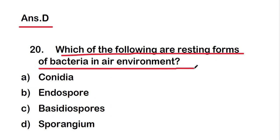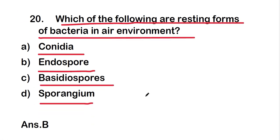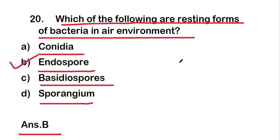The last question: which of the following are resting forms of bacteria in an air environment? The options are conidia, endospore, basidiospore, or sporangium. The right answer is option B, that is endospore. Endospore is the resting form of bacteria in an air environment. Thank you for watching this video.